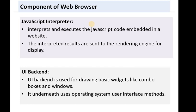Next is the JavaScript interpreter. This part interprets and executes JavaScript code included in a website, and the results are sent to the rendering engine for display. If the JavaScript code is an external file, the JavaScript interpreter first retrieves that external resource and then sends it to the rendering engine for display.